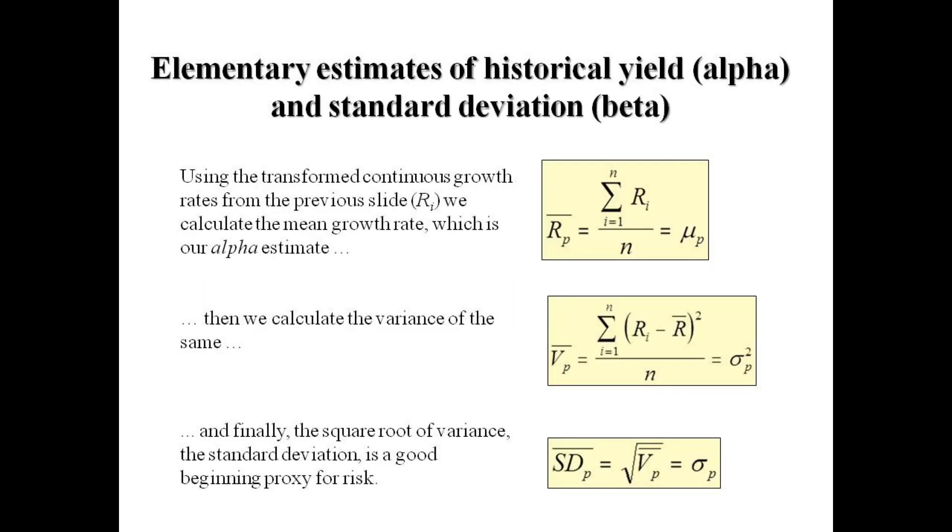Once we have that data converted in Excel or MATLAB or a computer program, we can calculate these three observations: the estimated historical growth rate of the stock, which is a simple formula for average; the variance, where we take each observation, subtract the mean, square it, and divide by the sample size; and finally, by definition, standard deviation, which is our first primary proxy for risk, is equal to the square root of that variance.